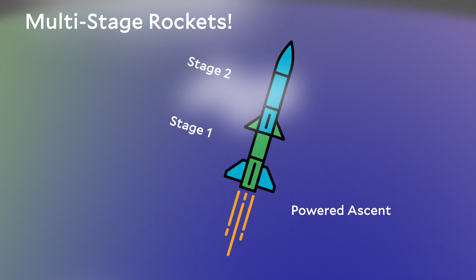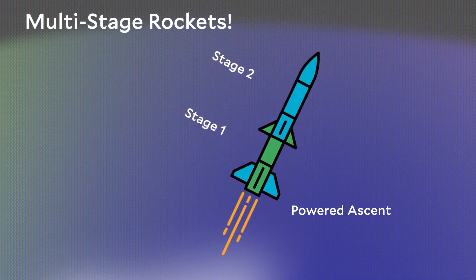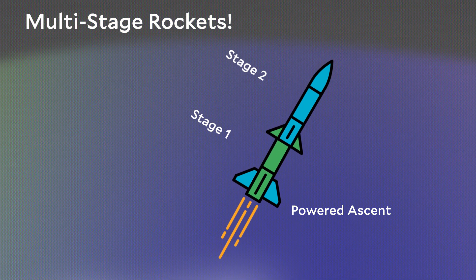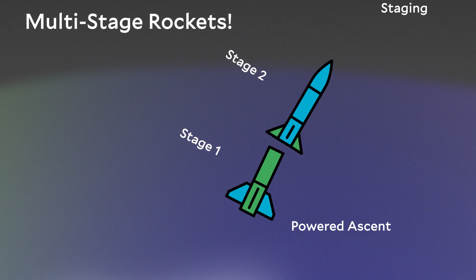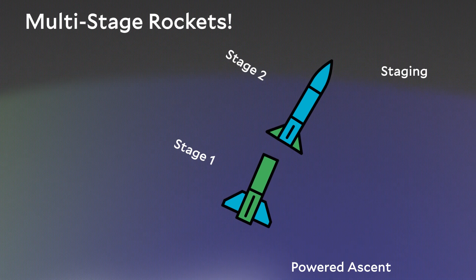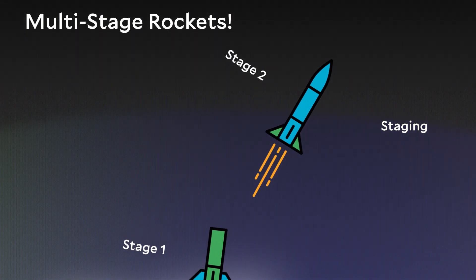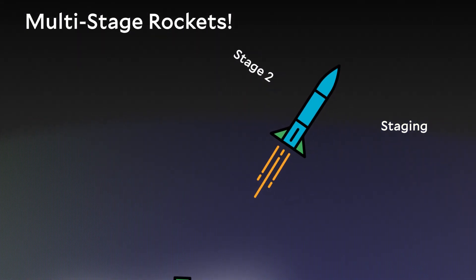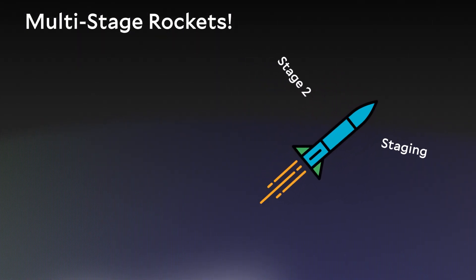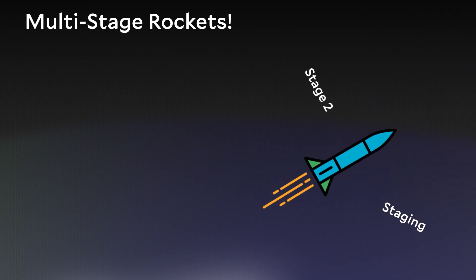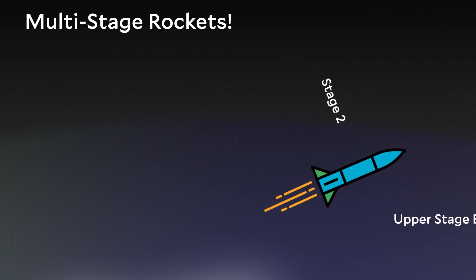For each stage, you need some kind of mechanism to jettison that empty tank — usually a small explosive bolt. You might ask: why would you do this? This adds complication, it adds risk. Now you have to worry about not only launching your rocket, but whether that empty tank is going to properly detach and eject. The increase in delta V is so large that it's worth the extra complication that comes with each added stage.